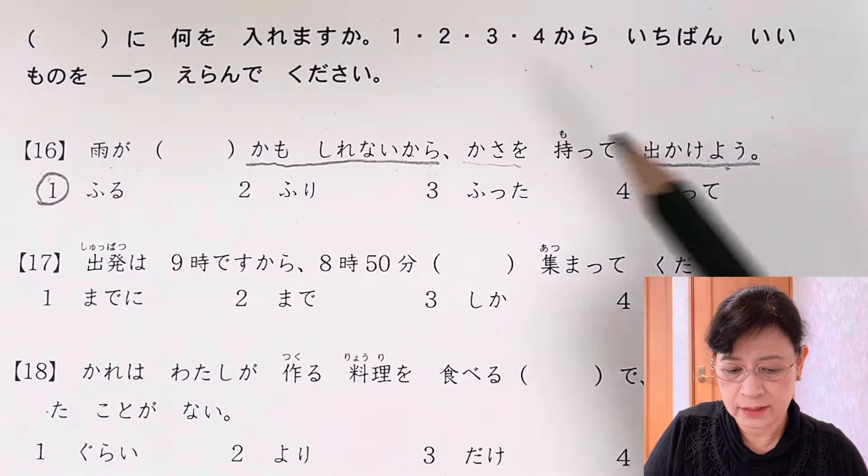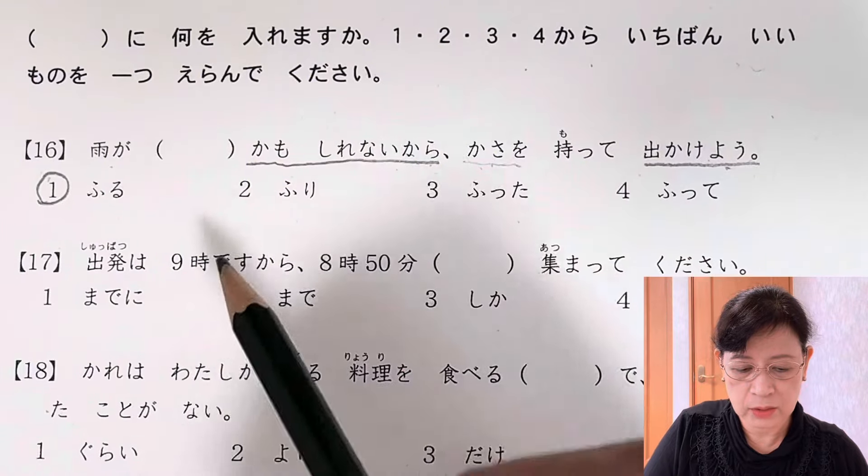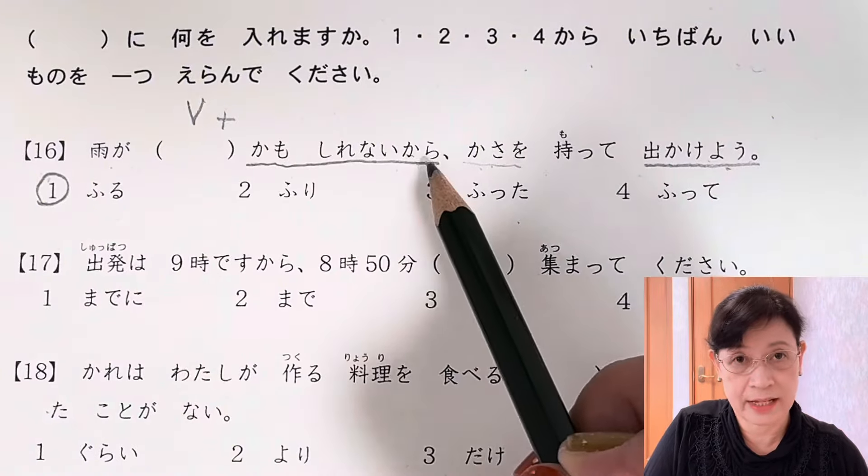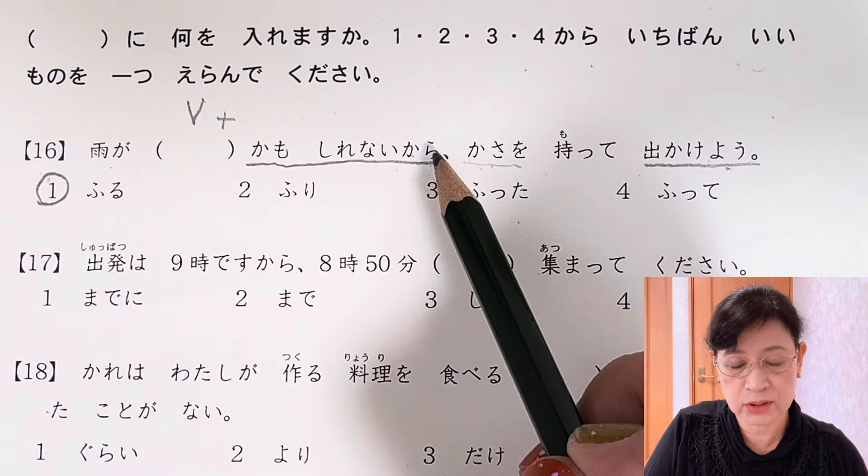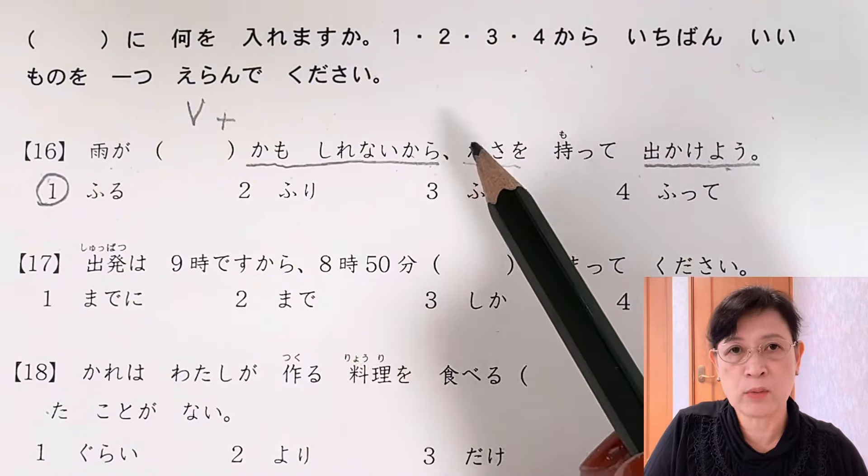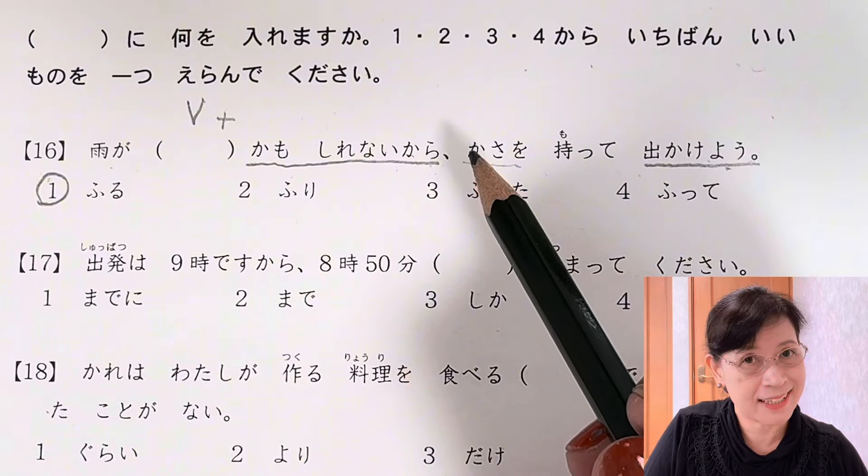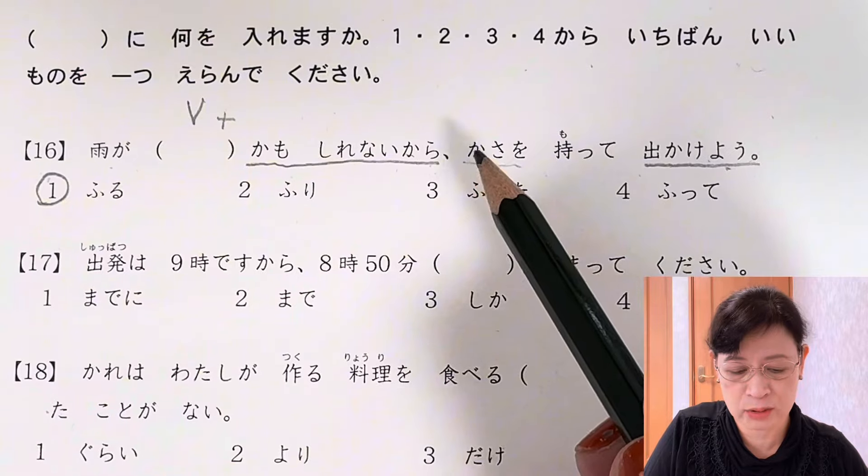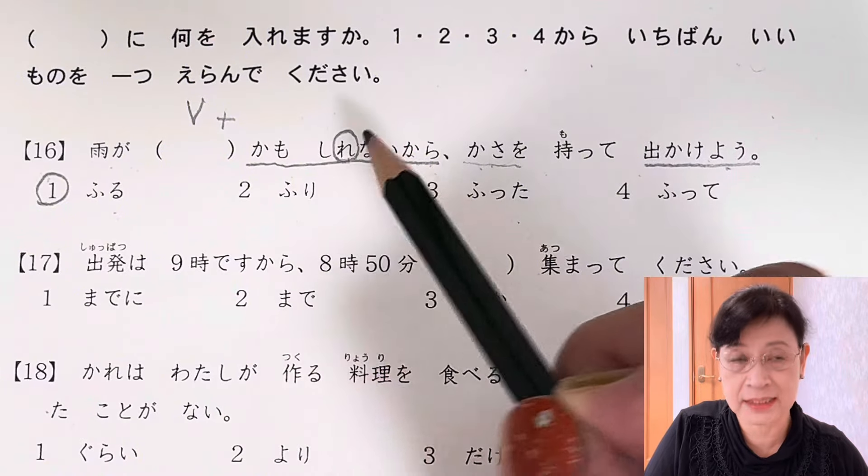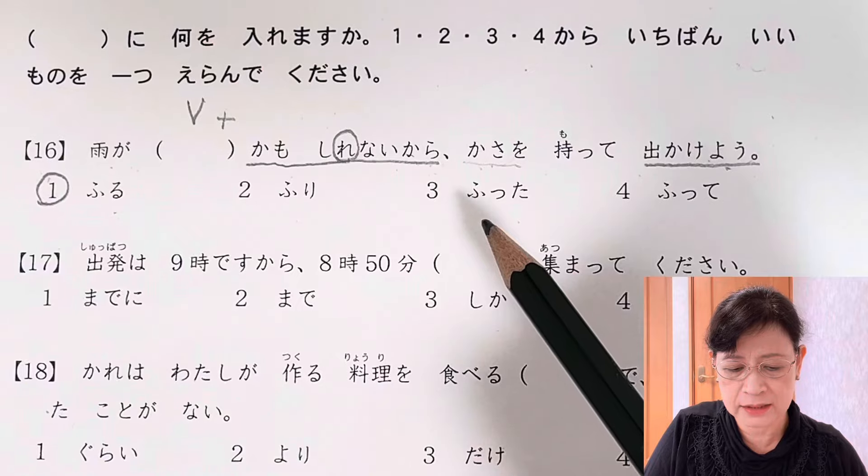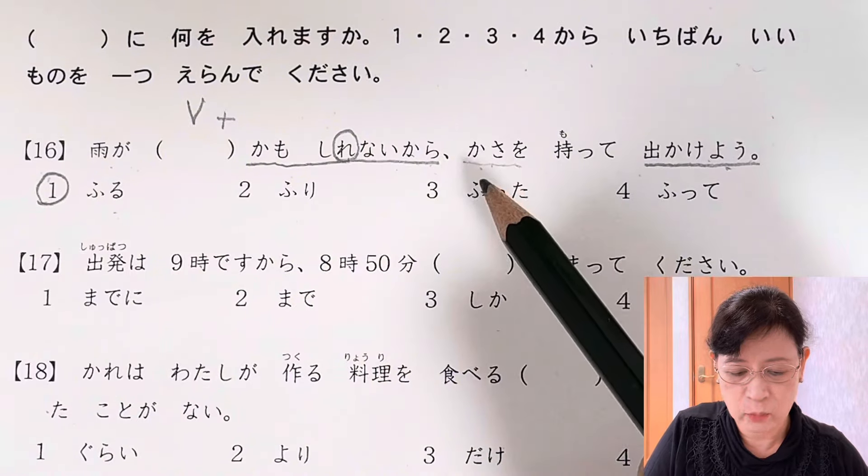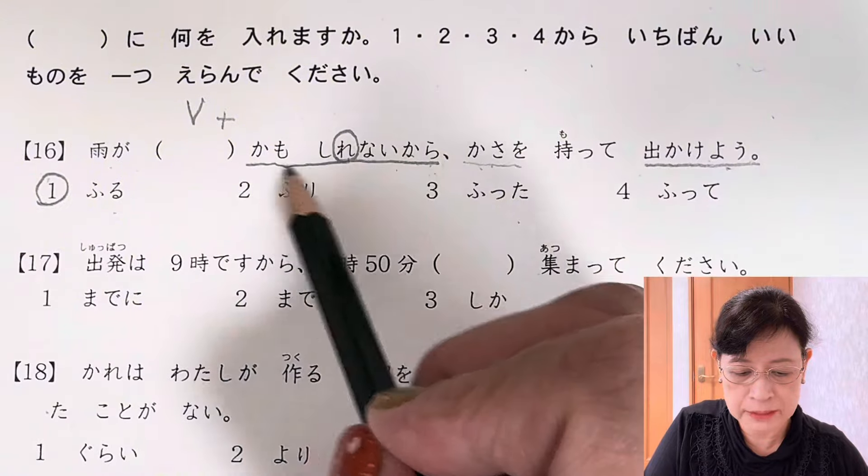This is a combination of verb plus かもしれない. You could also use a noun, adjective, or i-adjective, but all in plain form. When we say plain form, it means that it's not in the masu form. We have ふるかもしれない, so be careful with this. It's not ら for beginners - they seem to mistake this for かもしらない, so it's not the right one. It's しれない because there is a possibility.